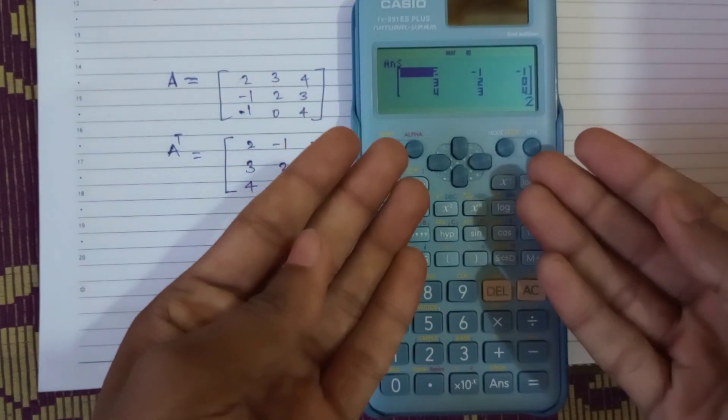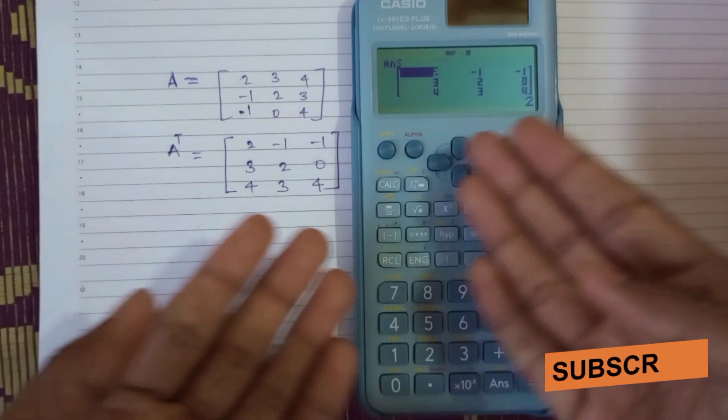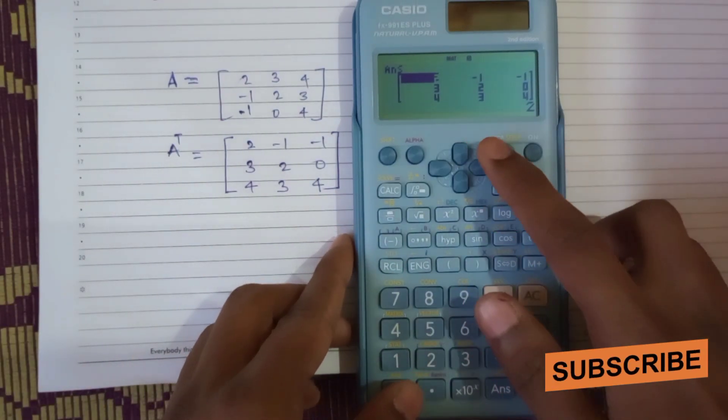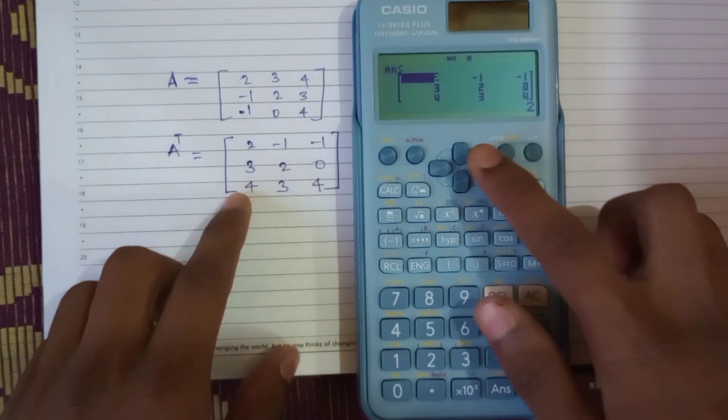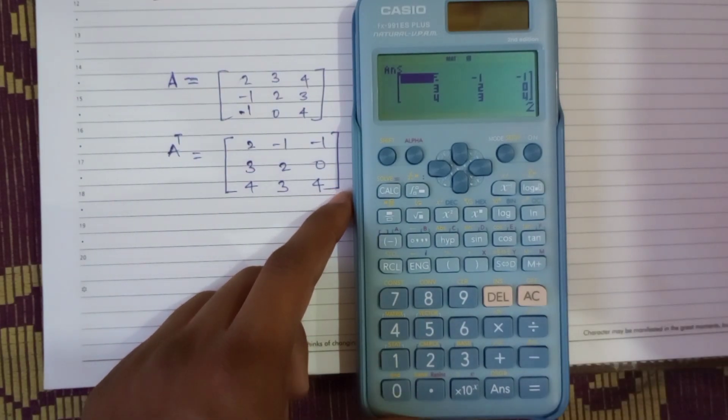This is matrix I have in this question. This is the answer, it's correct. 2, minus 1, minus 1, 3, 2, 0, 4, 3, 4. And that's the correct answer. Thank you.